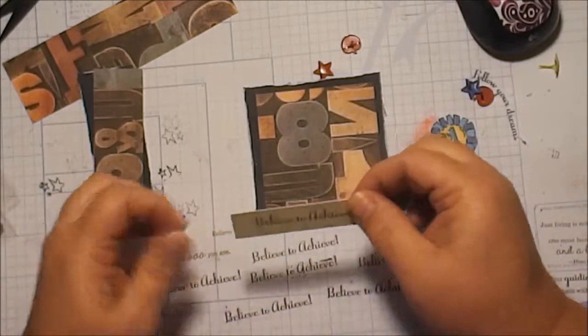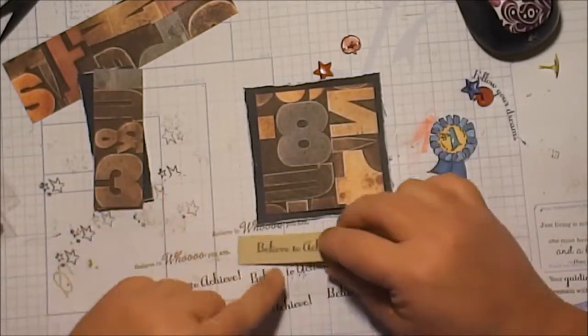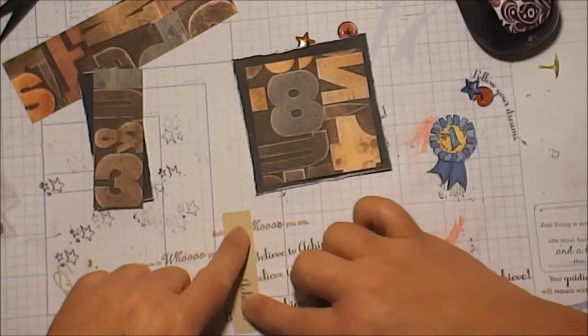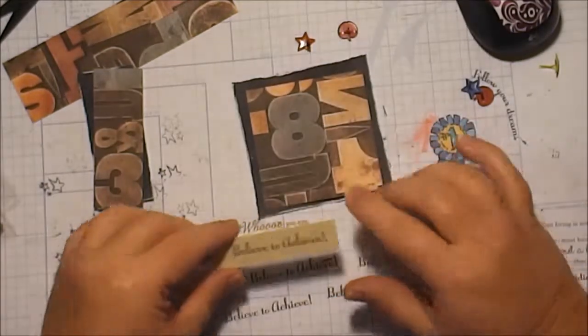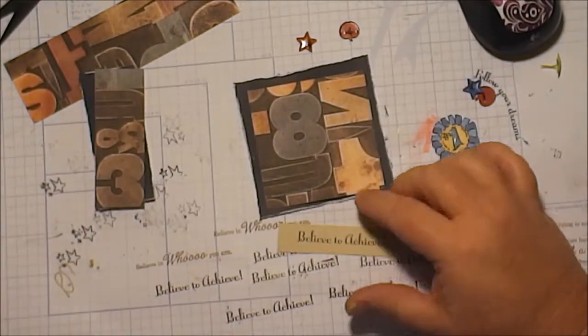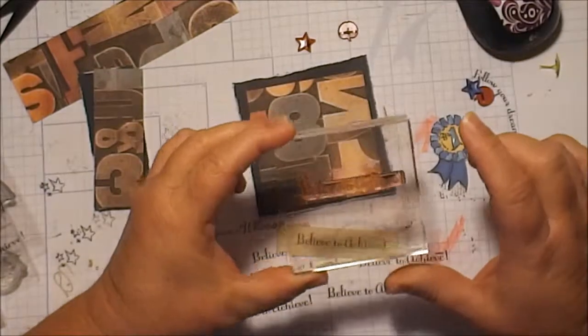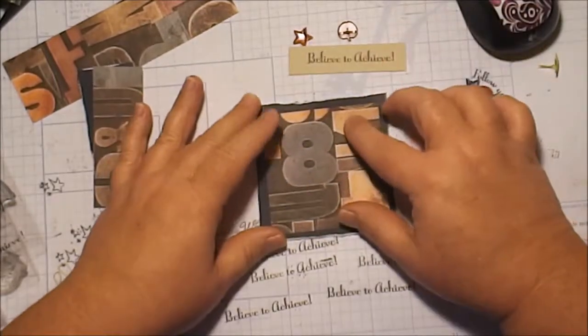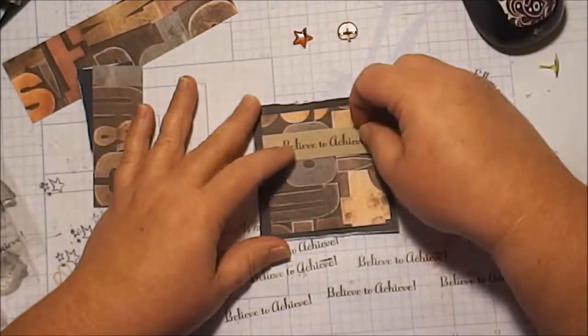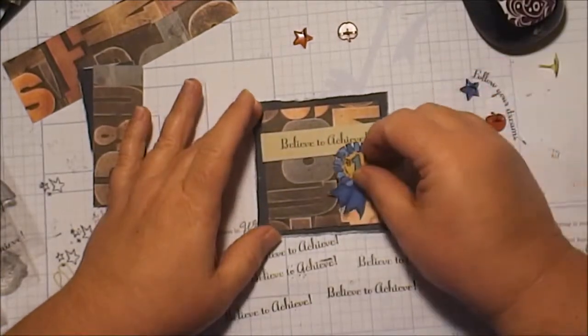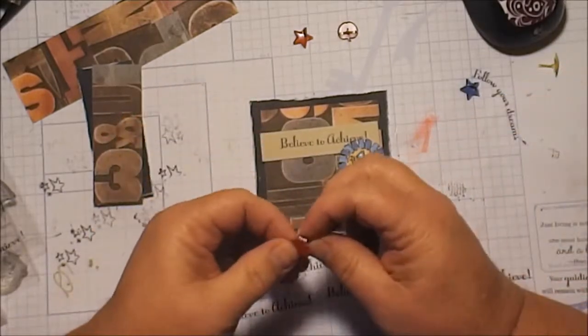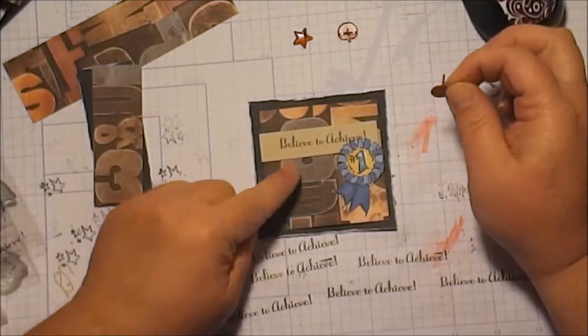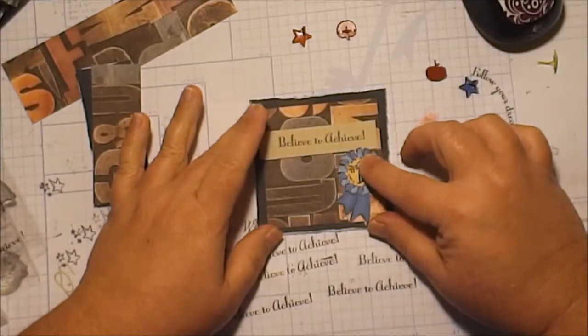I took a piece of cashmere cardstock and I cut that at, I think three and a quarter by about a half or so. And I stamped the sentiment that we're using for this month is Believe to Achieve from your stamp set. And I'm going to put that up here. I'm going to put my little ribbon, and then I found this little apple brad in my stash of brads. So I'm going to put that somewhere. Maybe I'll put two. Okay, so let's put that all down.